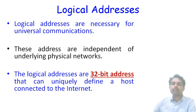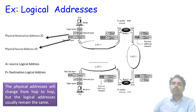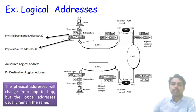Logical addresses are necessary for universal communications. These addresses are independent of underlying physical networks. Logical addresses are 32-bit addresses that can uniquely define a host connected to the internet. In this example, data is sent from a sender to a receiver via three local area networks with two intermediate routers. The source logical address is A and the destination logical address is P. This process is carried out at the data link layer and the network layer.